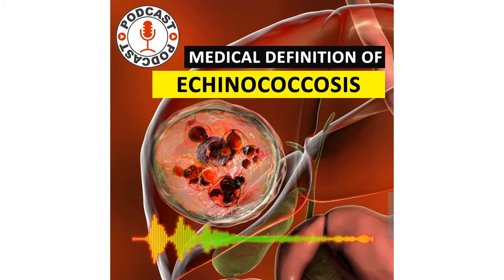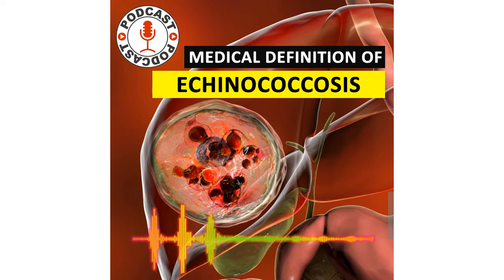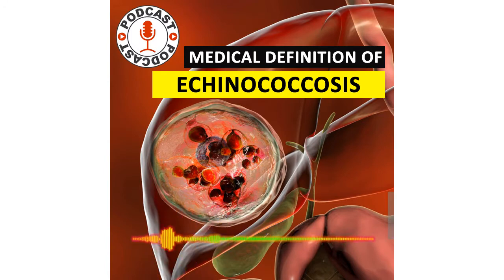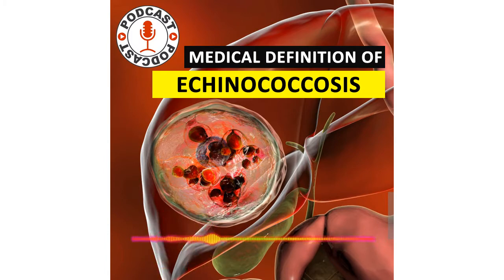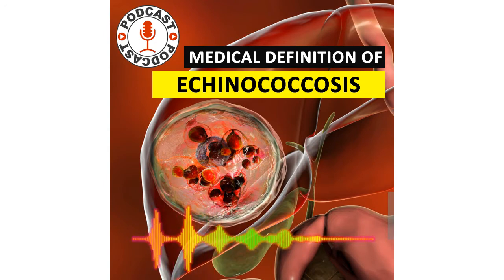Although many infections are acquired during childhood, clinical signs of echinococcus may not appear for years, except when cysts are in vital organs. Symptoms and signs may resemble those of a space-occupying tumour. Liver cysts may eventually cause abdominal pain or a palpable mass. Jaundice may occur if the bile duct is obstructed. Rupture into the bile duct, peritoneal cavity, or lung may cause fever, urticaria, or a serious anaphylactic reaction.